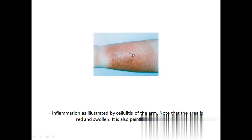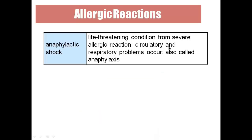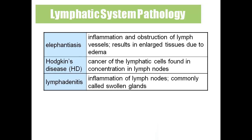Signs of cellulitis: the body becomes inflamed, red, painful, and hot to touch. Anaphylactic shock: a certain common substance attacks the respiratory and cardiovascular system — for example, some people are allergic even to banana, which can attack the respiratory system making it hard to breathe. Any allergic reaction that is life-threatening is called anaphylactic shock. Elephantiasis is also called lymphedema, due to inflammation and obstruction of lymphatic vessels. Hodgkin's disease is cancer of the lymphatic cells, concentrated mainly in the lymph nodes.